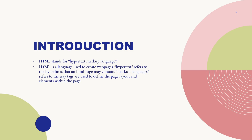HTML stands for HyperText Markup Language, and HTML is a language used to create web pages. Hypertext refers to the hyperlinks that an HTML page may contain, and markup language refers to the way tags are used to define the page layout and elements within the page.